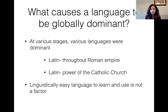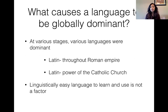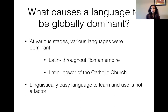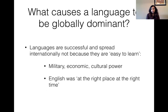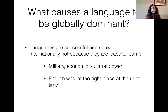What causes a language to be globally dominant? At various stages, various languages were dominant. Latin was dominant when the Roman Empire was powerful and when the Catholic Church was dominant. Latin used to be a very dominant language, yet ease of learning is not a factor — Latin is not a very easy language to learn. Languages are dominant not because they're easy to learn, but because they have military, economic, and cultural power. We often talk about English being at the right place at the right time, because of colonization, trade, the Industrial Revolution, and military, economic, and cultural dominance in the world at that point.